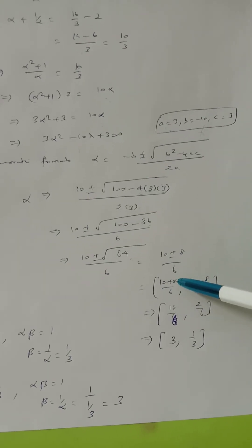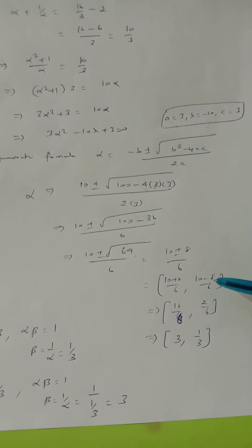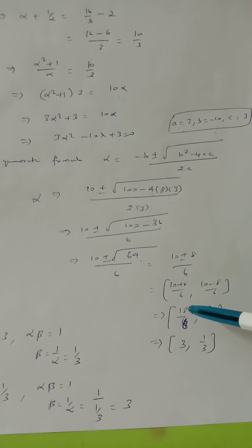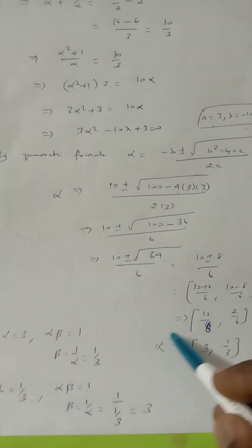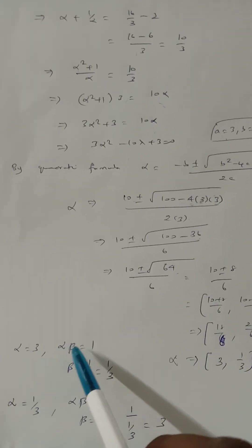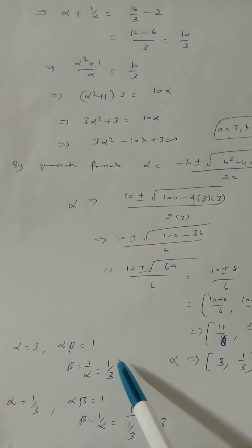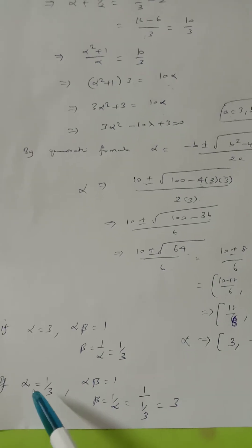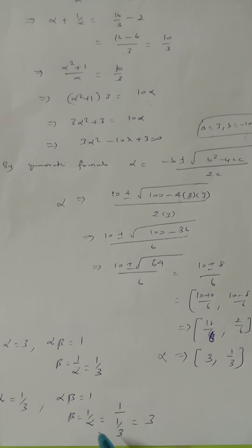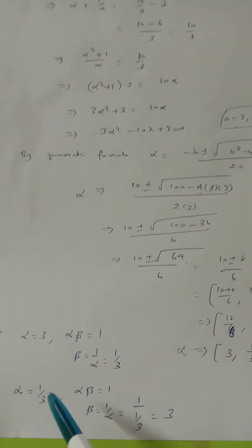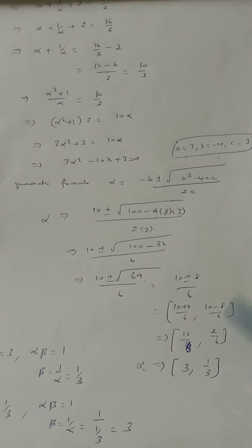Two answers: alpha equals 10 plus 8 over 6 equals 18/6 equals 3, and alpha equals 10 minus 8 over 6 equals 2/6 equals 1/3. So alpha is 3 or 1/3. Since alpha·beta equals 1, when alpha equals 3, beta equals 1/3, and when alpha equals 1/3, beta equals 3. With gamma equals 2, the final answers are the three roots: 3, 1/3, and 2.